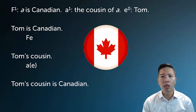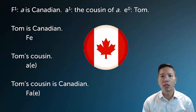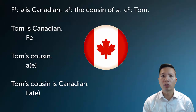So how can I say 'Tom's cousin is Canadian'? I just need to remember that what goes into a predicate is a subject, an individual, a term. So I can put in A bracket E bracket, and that says Tom's cousin is Canadian. Don't be deceived — I only put one term into my predicate F because F is a one-slot predicate, and that term just happens to be the operation 'Tom's cousin.'